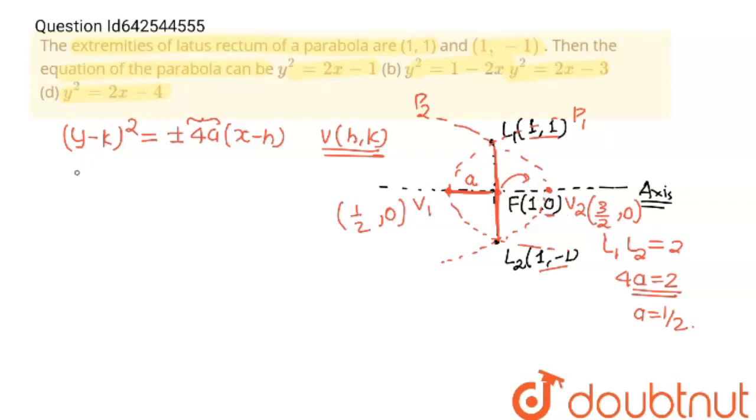Now, everything is clear. Now, for this V1, equation P1 will be: y², k is 0. So, y² is equal to, P1 parabola is opening towards right, so positive will be taken. I am going to use positive sign. 4a is 2, so I write 2 times of (x - h), h is 1/2. I am going to multiply this inside, so you will get y² = 2x - 1. And you can see first option is correct.